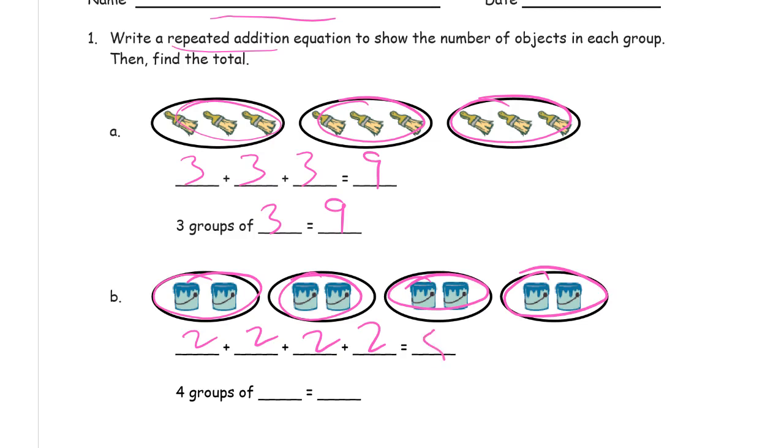Two, four, six, eight. Four groups of two equals eight.